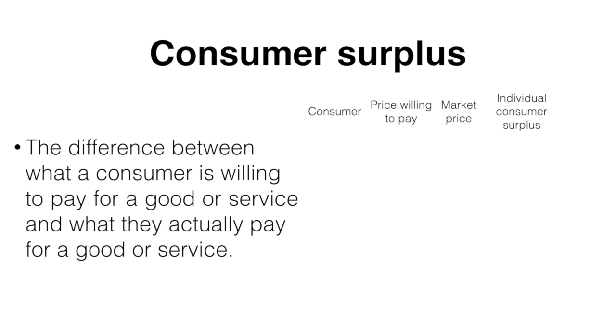Consumer A is willing to pay $5 and only pays $2, therefore they enjoy a surplus of $3. Consumer B is willing to pay $4 and only pays $2 and enjoys a surplus of $2. Finally, consumer C is willing to pay $3 and only pays $2, so they will enjoy a surplus of $1. The total consumer surplus would be the sum of these three which will be $6 in total.